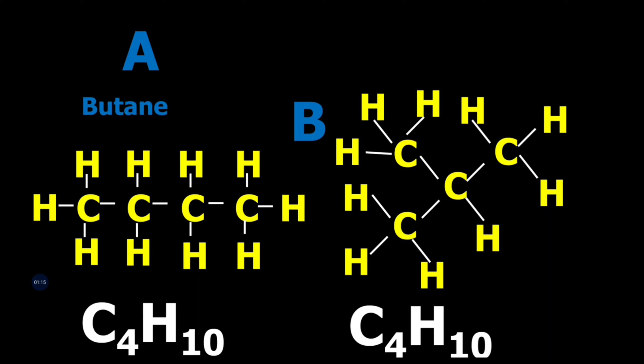A is butane. It's a butane molecule, 4 carbon chain. B is 2-methylpropane. The prop part tells us that it's a 3 carbon chain.